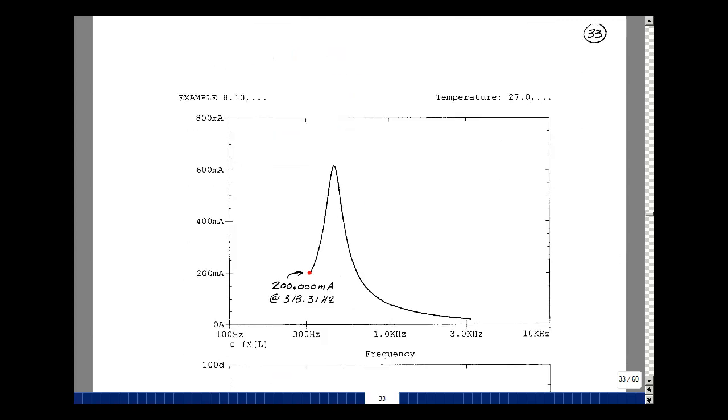Let's next look at our inductor current. So the magnitude of the inductor current, I m parentheses L. That would be the current in element L and the magnitude of the phasor current. At 200.000 milliamps, that's exactly what we hand calculated at 318.31 hertz.